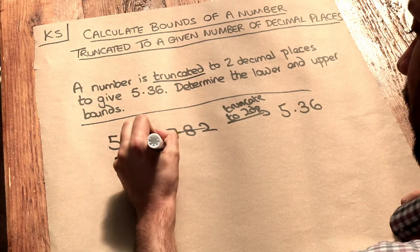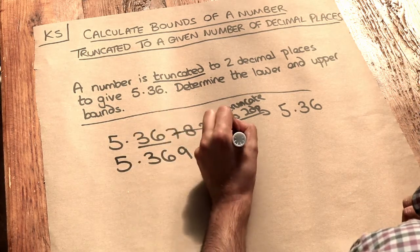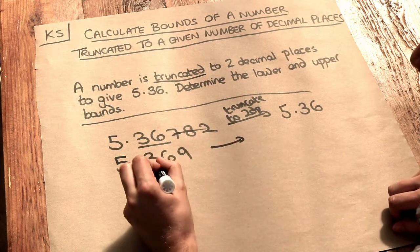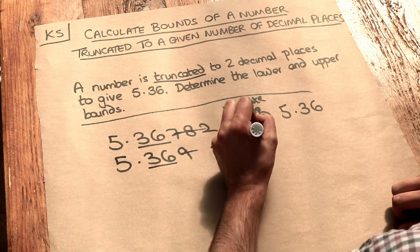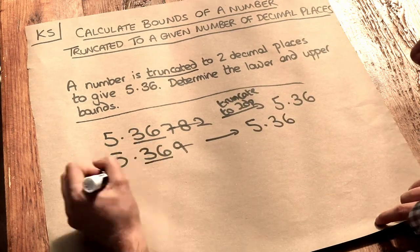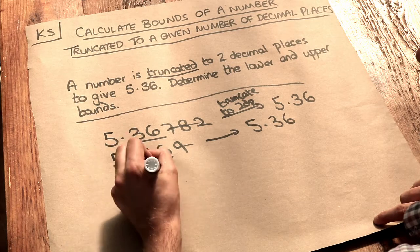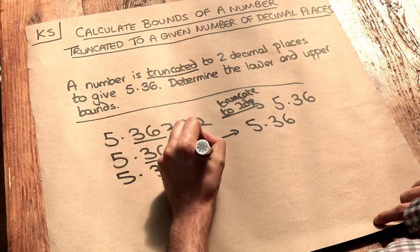We can get 5.369 and if we truncate that to two decimal places, we keep the first two digits after the decimal place, discard everything after, that would still be 5.36. And we could keep on adding nines on the end. So we could have 5.36999999, etc.